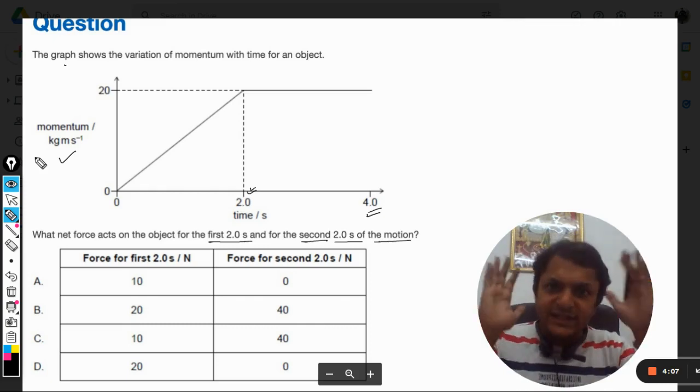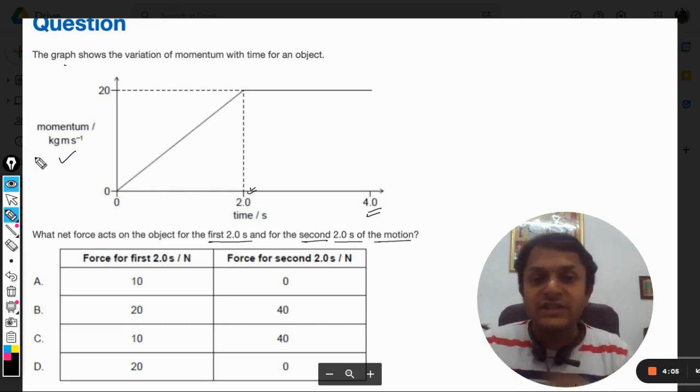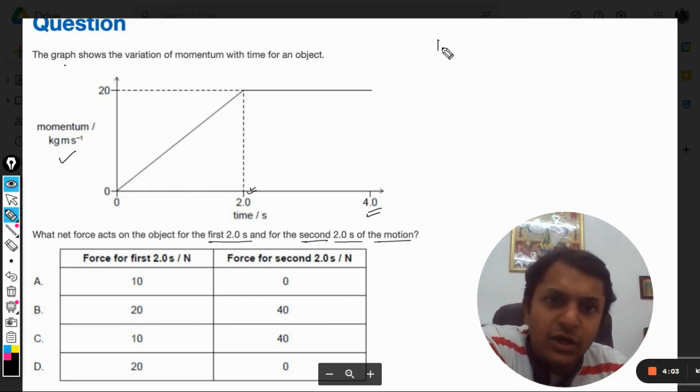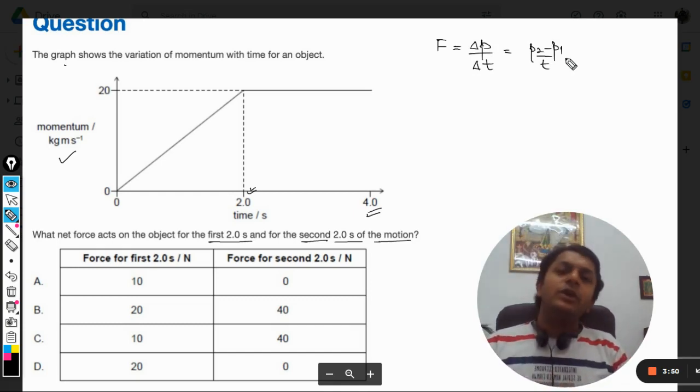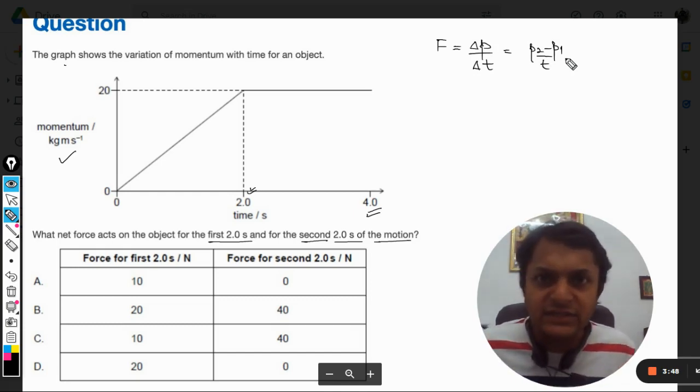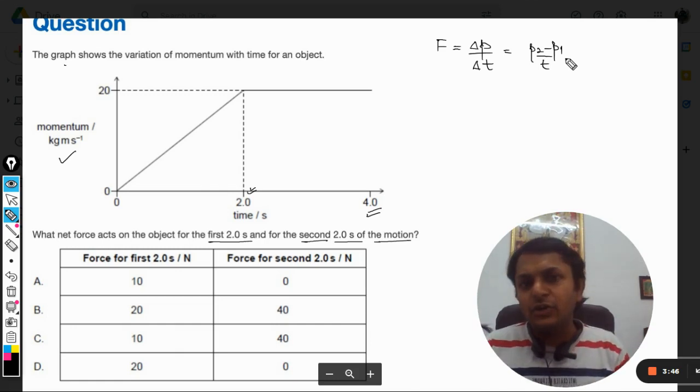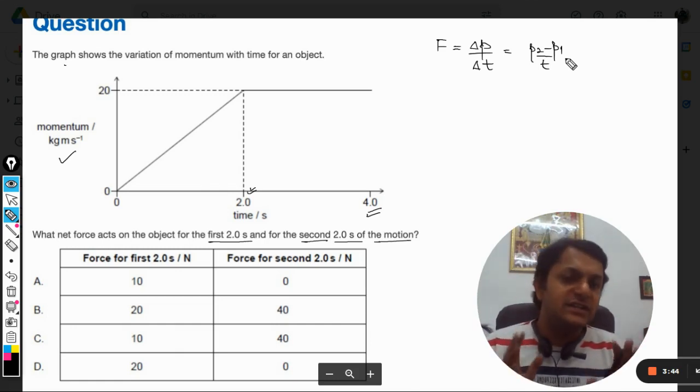Let us see what is Newton's second law. Newton's second law states that force is defined as rate of change of momentum. So the momentum should change if the force is acting on it, and if the momentum of the body does not change, it means the force acting on the body is definitely zero.